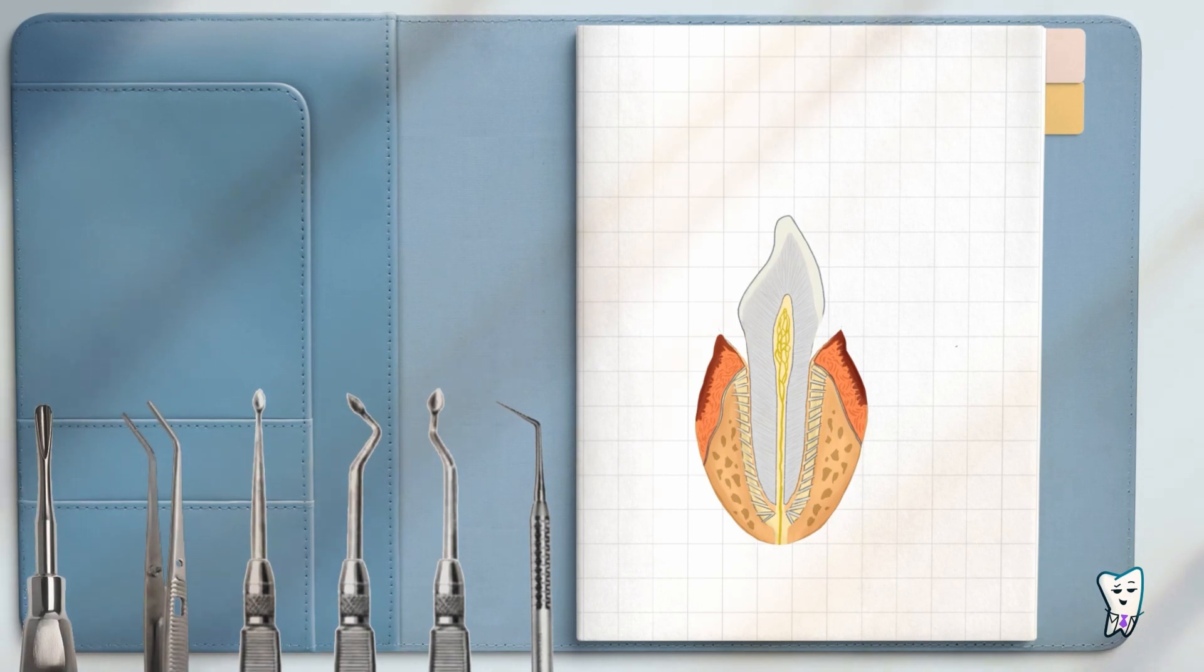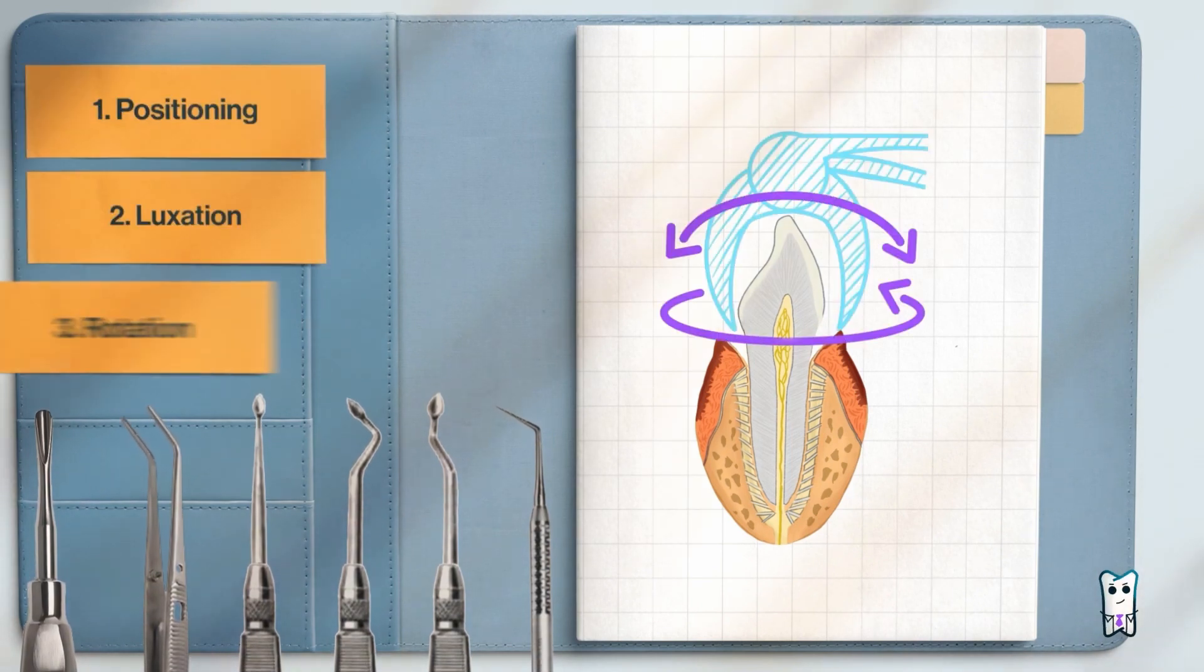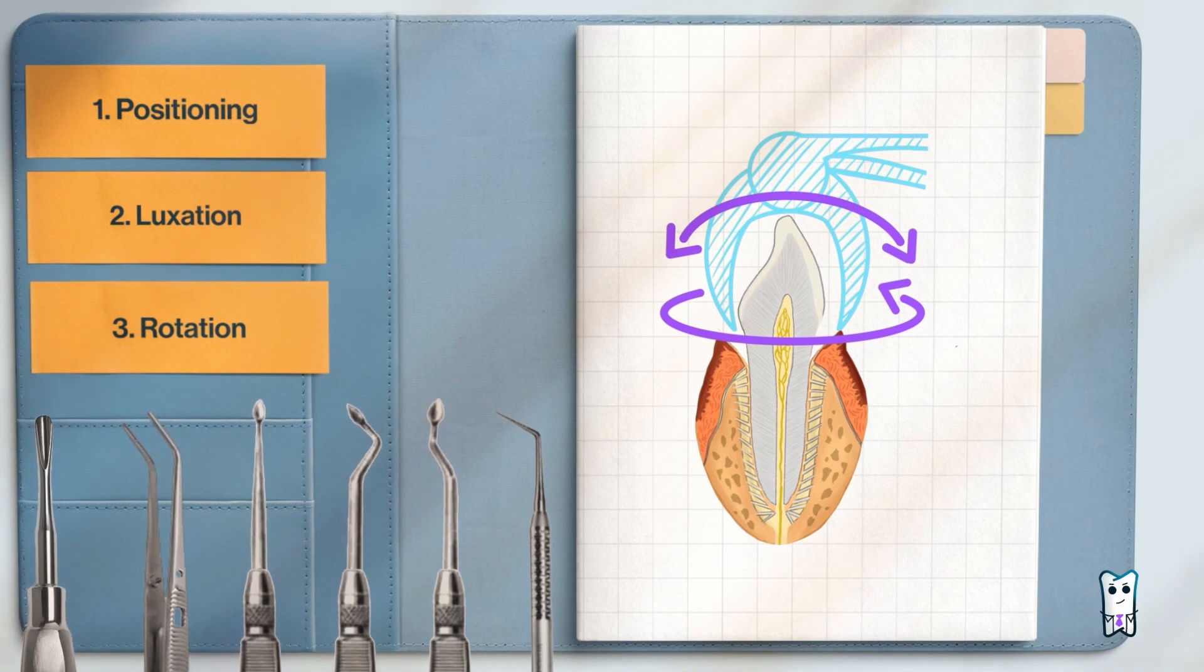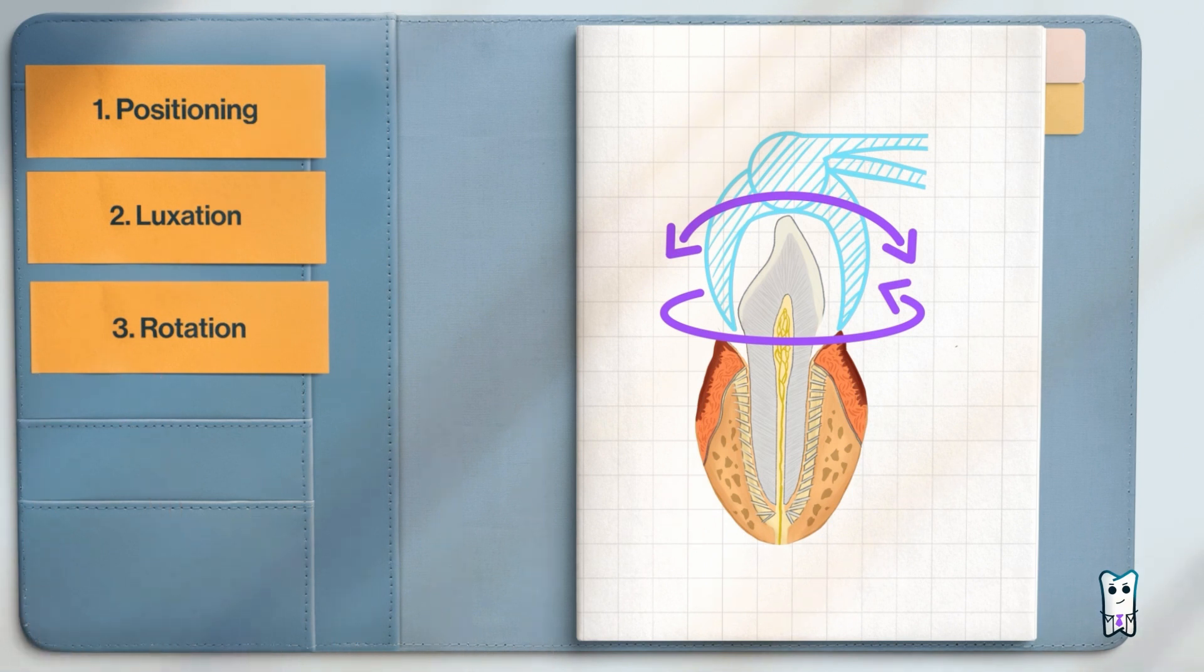With forceps can be performed luxational and rotational movements. You must understand that the idea behind luxation and rotation is to expand the alveolus and rupture the periodontal ligaments.